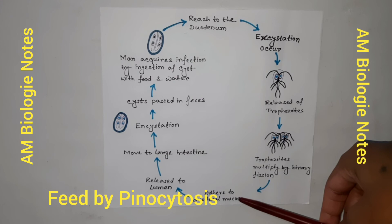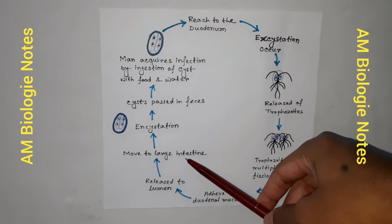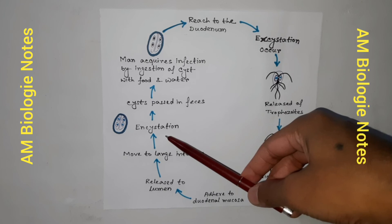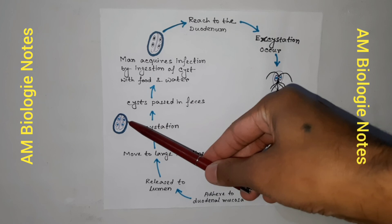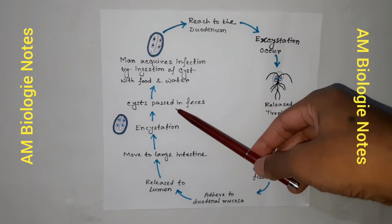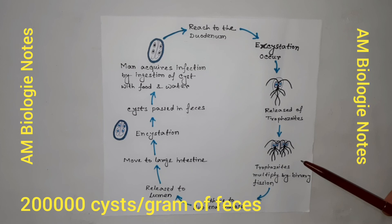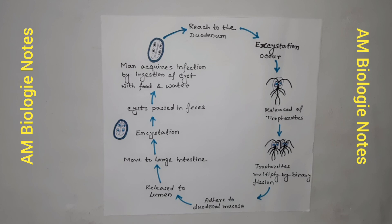Gradually, when the trophozoites pass down to the large intestine, unfavorable conditions promote encystation. Encystation begins with retraction of the flagella, followed by condensation of the cytoplasm, and finally formation of the cyst wall. On maturation, the nuclei divide to become four. The mature cysts excreted in feces can survive better in the environment and are infective to man. There may be 2 lakh cysts passed per gram of feces. The infective dose is 10 to 100 cysts.